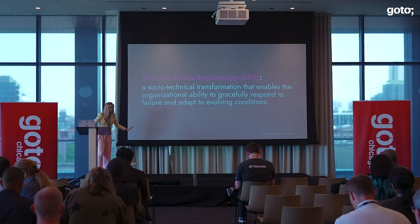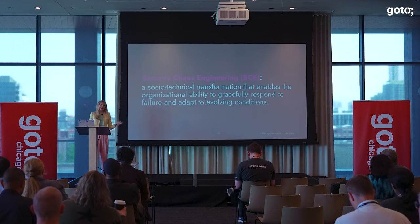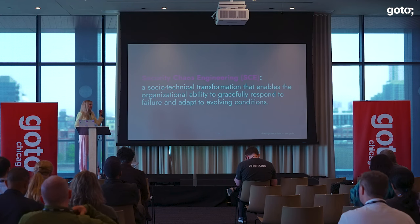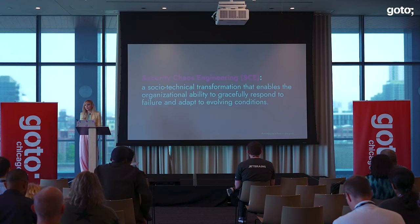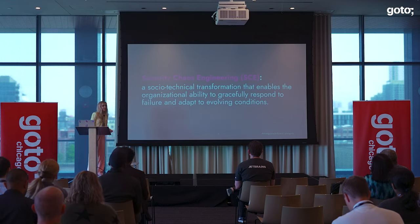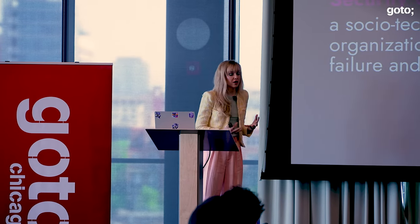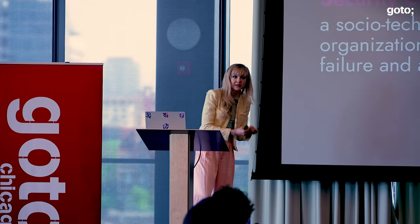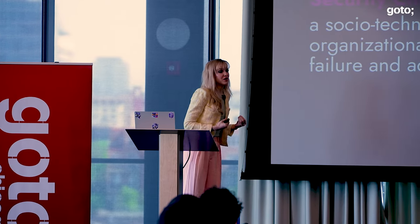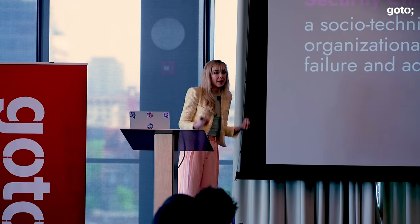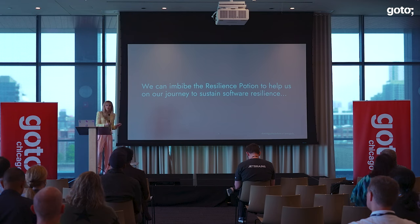So where does security chaos engineering fit in? If I had my druthers, I would just call it resilience engineering or software resilience engineering, but it's called security chaos engineering. The way I define it — and I have the luxury to do so because I wrote the book on it — is a socio-technical transformation that enables the organizational ability to gracefully respond to failure and adapt to evolving conditions. Security chaos engineering recognizes that we have to make sure our mental model is clear, then observe reality to refine it, aligning them as much as possible. This means we can design for change — we can be good engineers who understand that all software success depends on context.